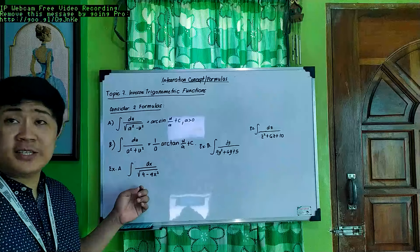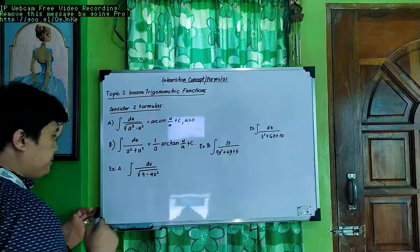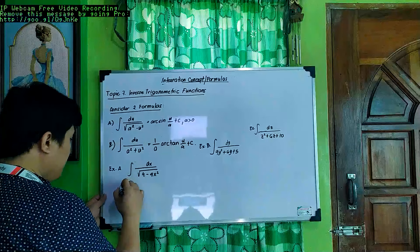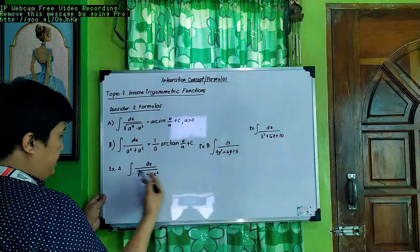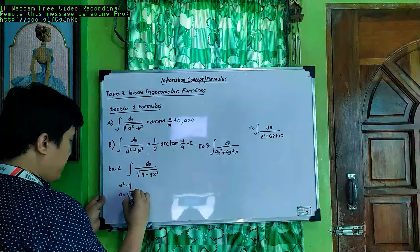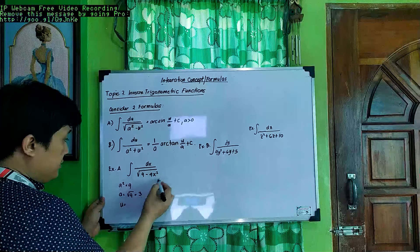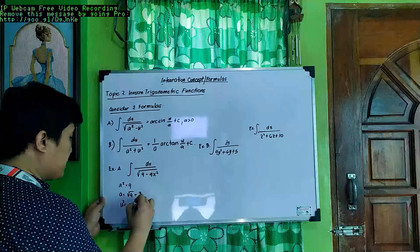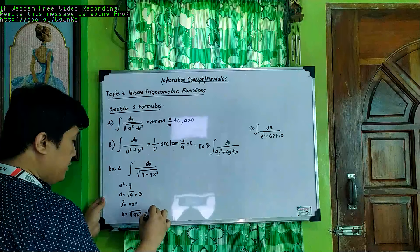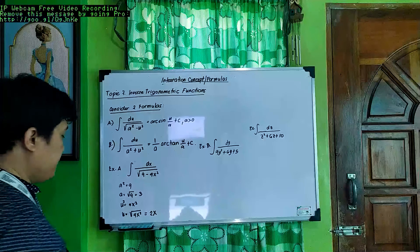Our first example is the integral of dx over the square root of 9 minus 4x squared. First, let's get the values of a and u. We know a is a constant, so a squared is 9, and a is the square root of 9, which equals 3. And u squared is 4x squared, so u is the square root of 4x squared, which gives you 2x — square root of 4 is 2, and square root of x squared is x.